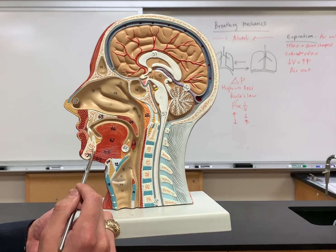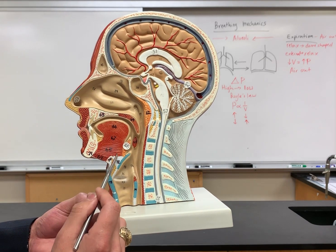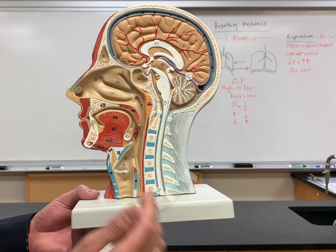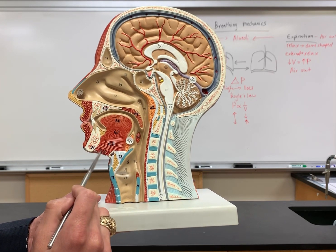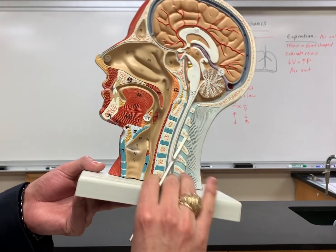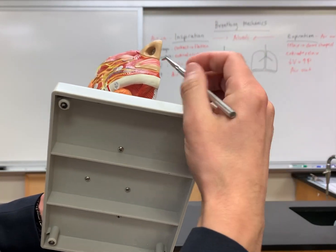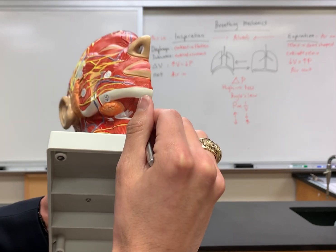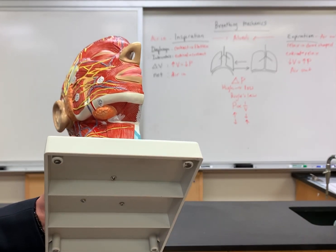This muscle here is going from the chin to the hyoid bone, so it's the geniohyoid muscle at number 68. Number 69 is the mylohyoid — you can also see it here on the bottom. This muscle without a number is known as the digastric, specifically the anterior belly of the digastric muscle.